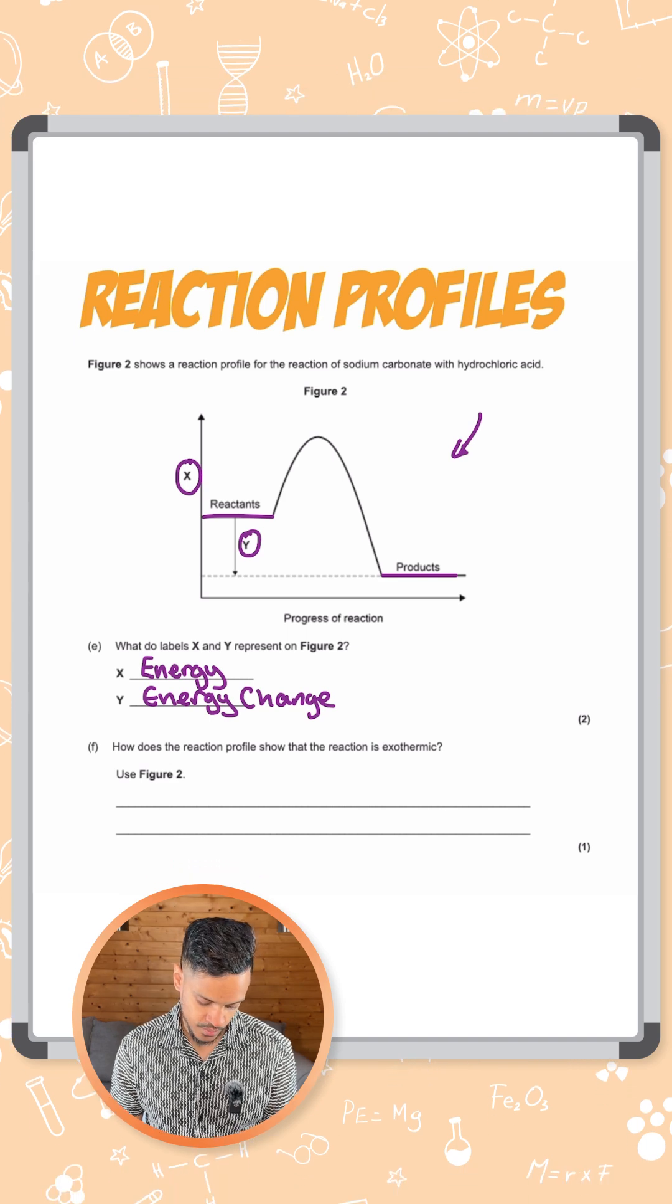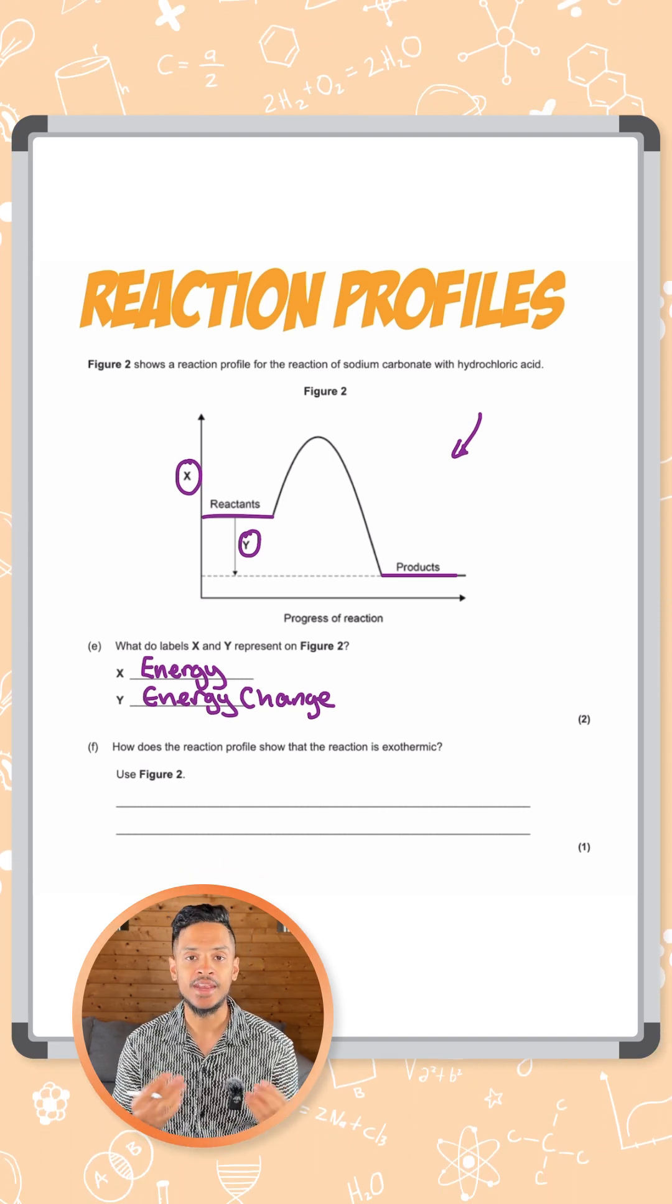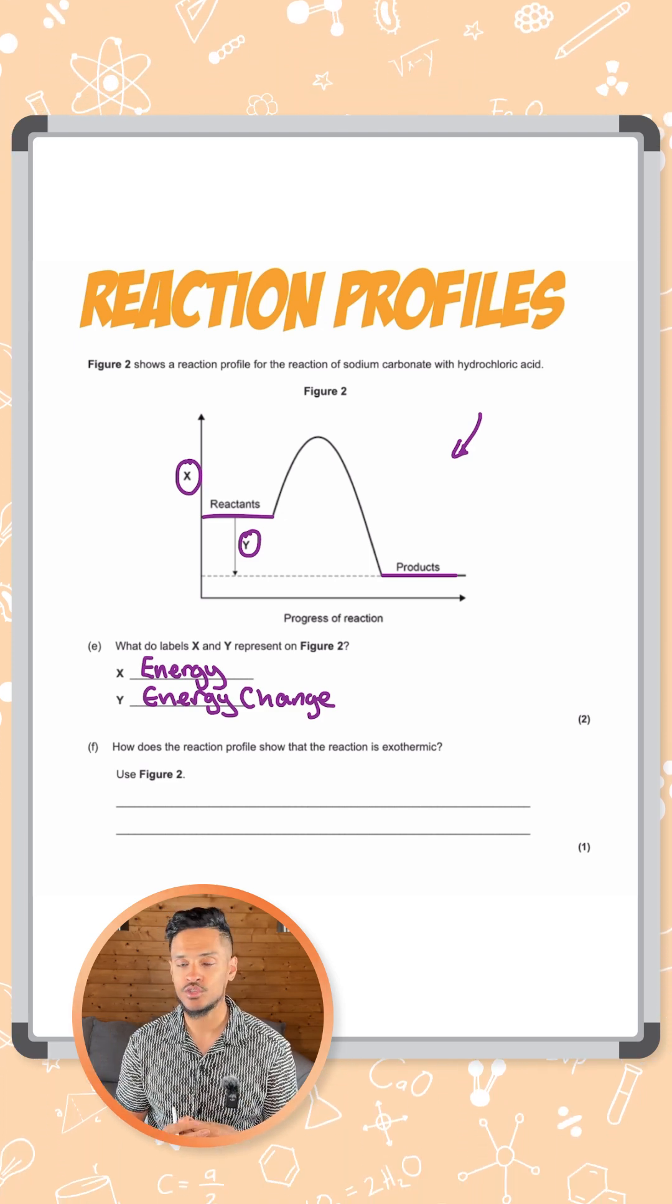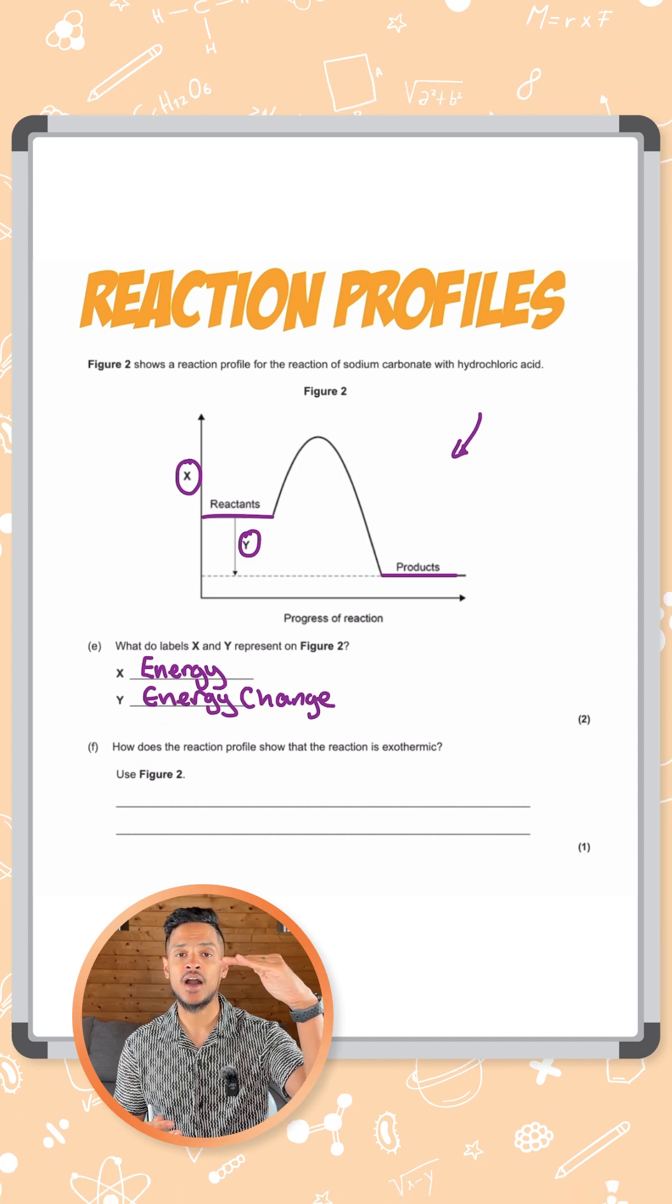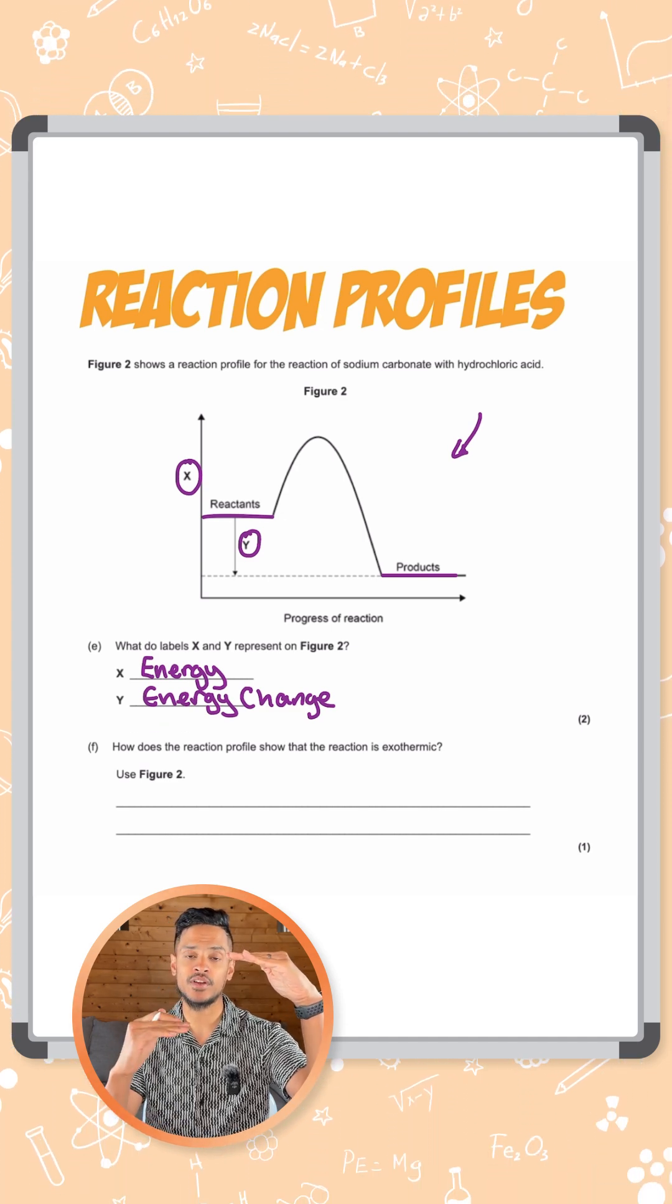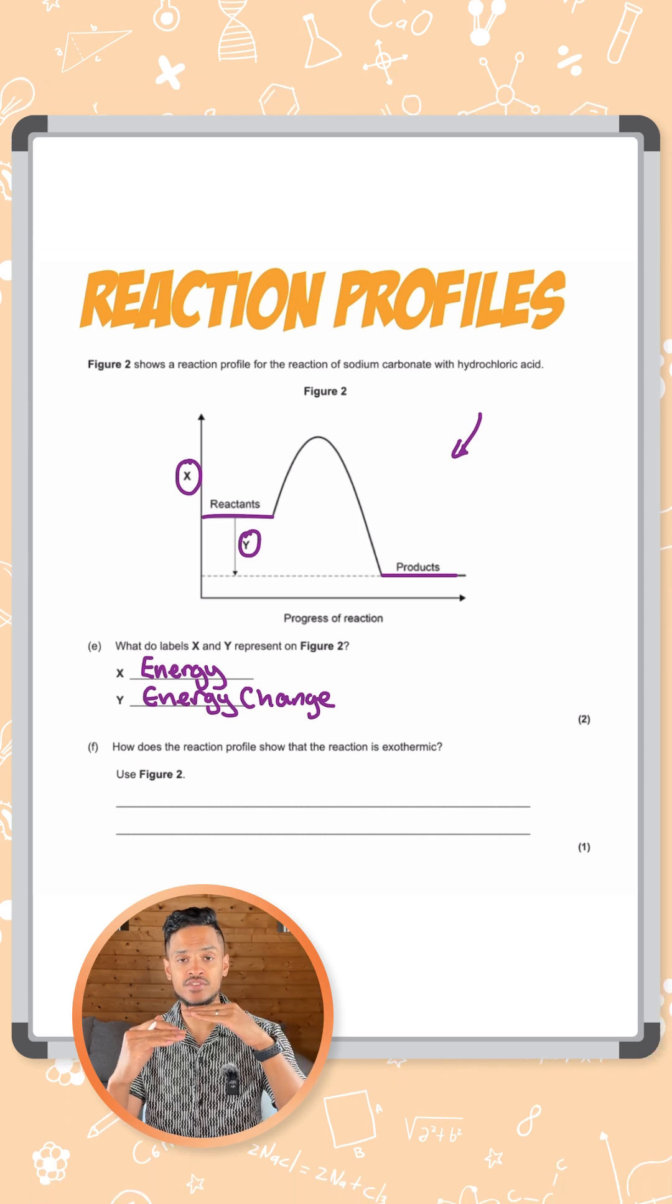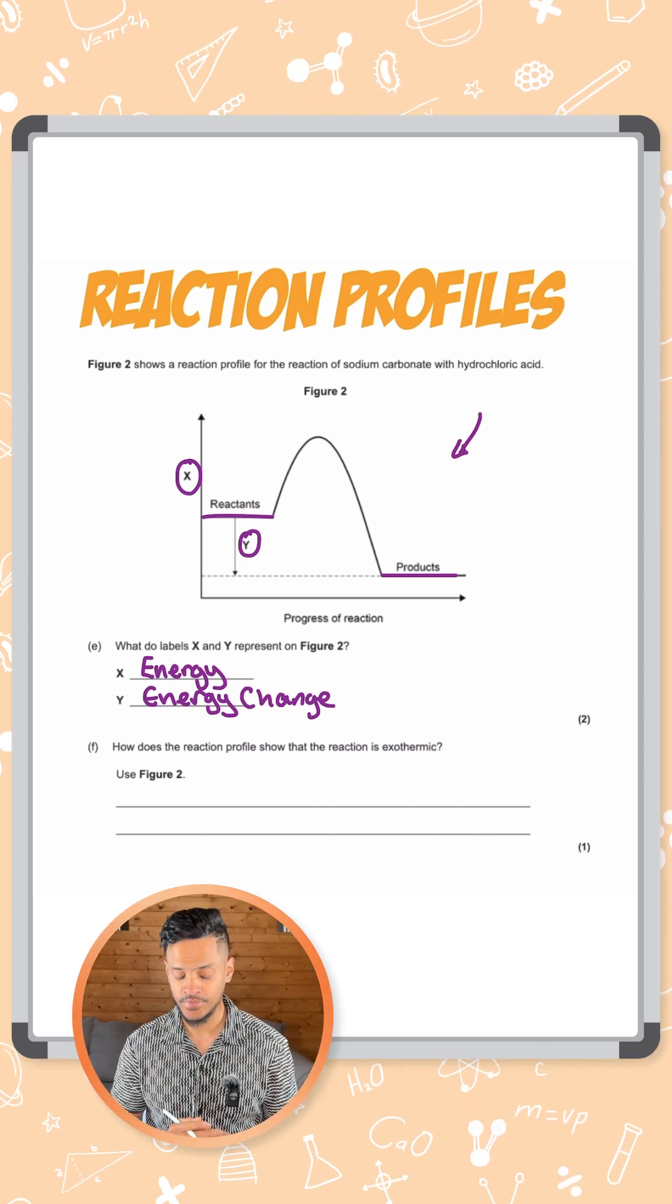The next part says how does the reaction profile show that the reaction is exothermic? An exothermic reaction is a reaction where energy is released to the surroundings. So the energy of your reactants is higher than the energy of your products because they're losing some of that energy and eventually when it comes to the end of the reaction there are much lower energy level.